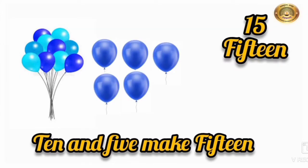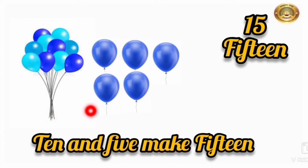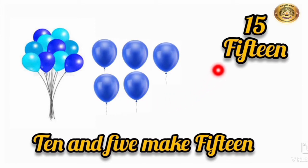Let's see the next number which comes after 14. The next number is 15. Let's count the balloons: 1, 2, 3, 4, 5. Here we have 1 ten and 5 more balloons. So 10 and 5 make 15. Let's see the spelling of 15: F-I-F-T-E-E-N. 15.